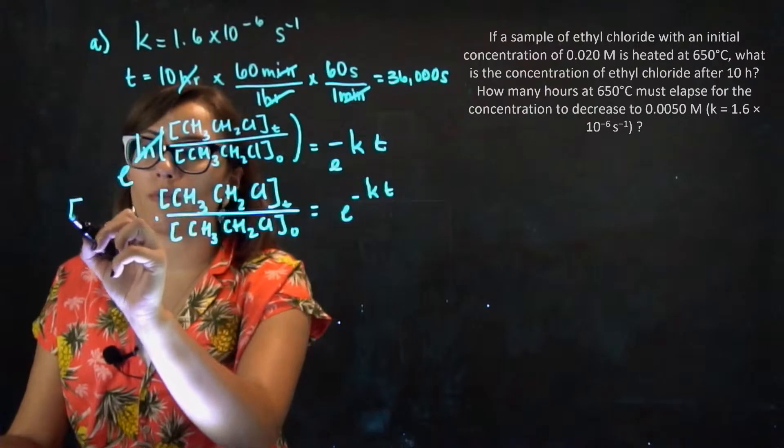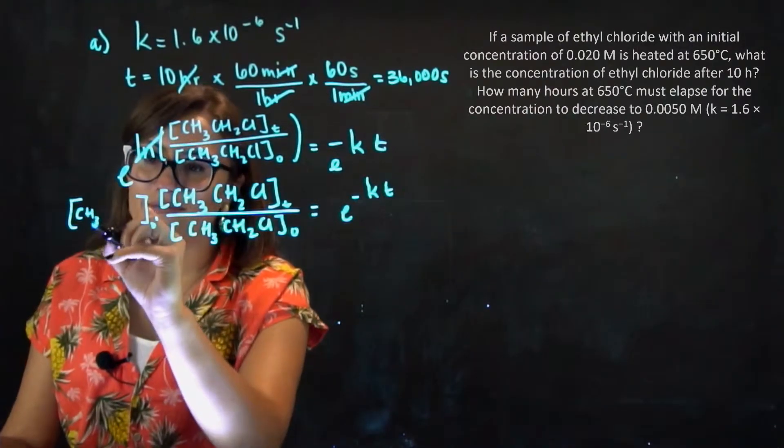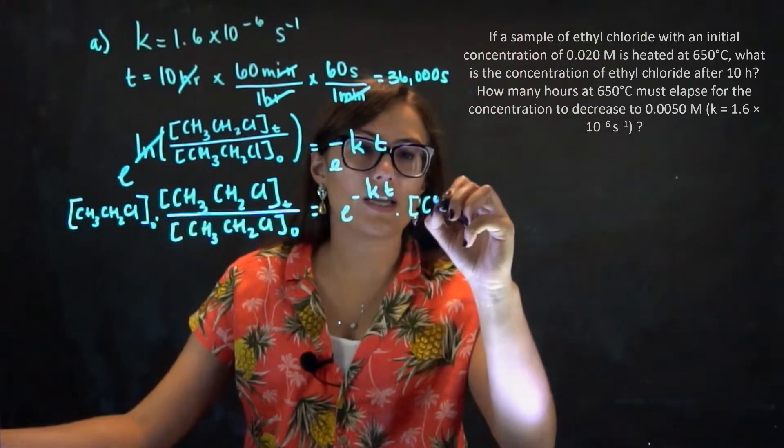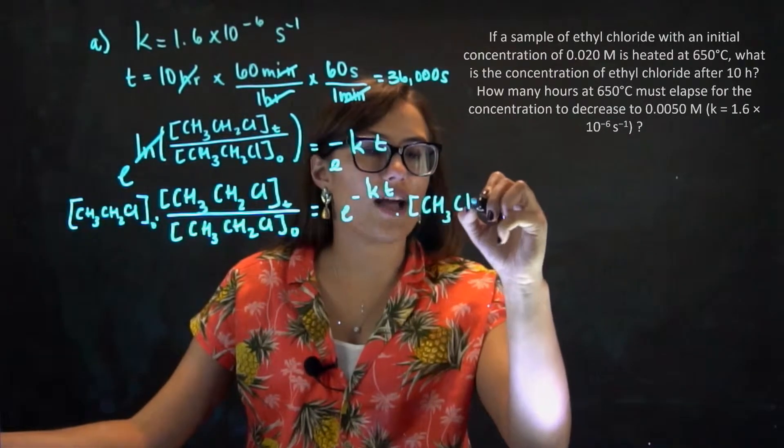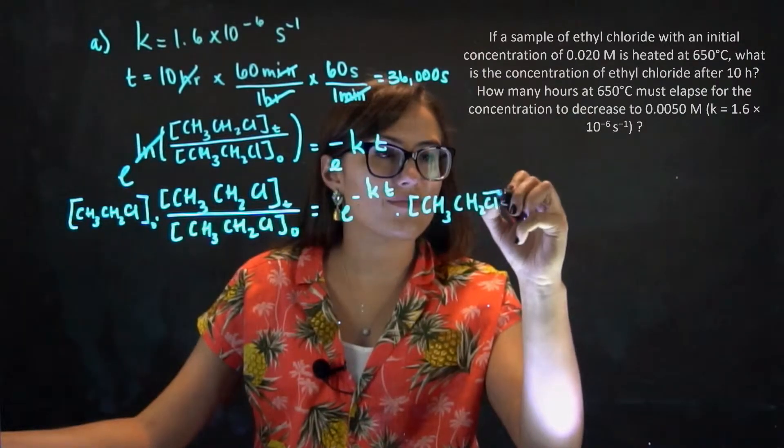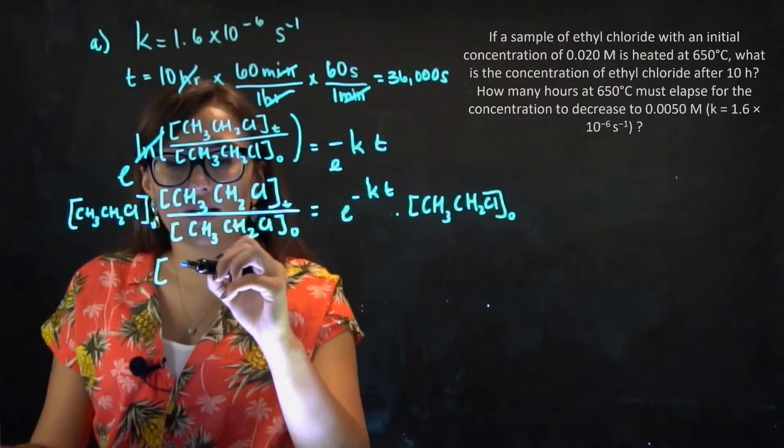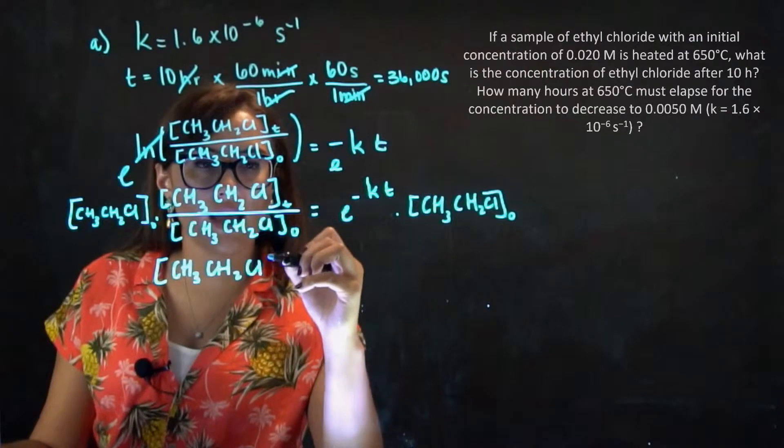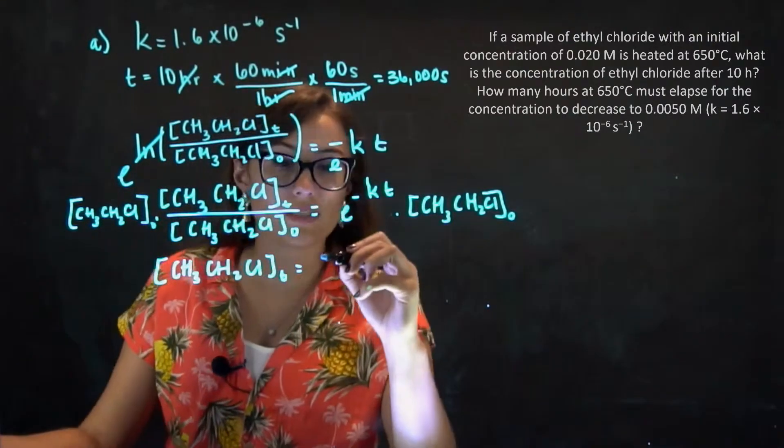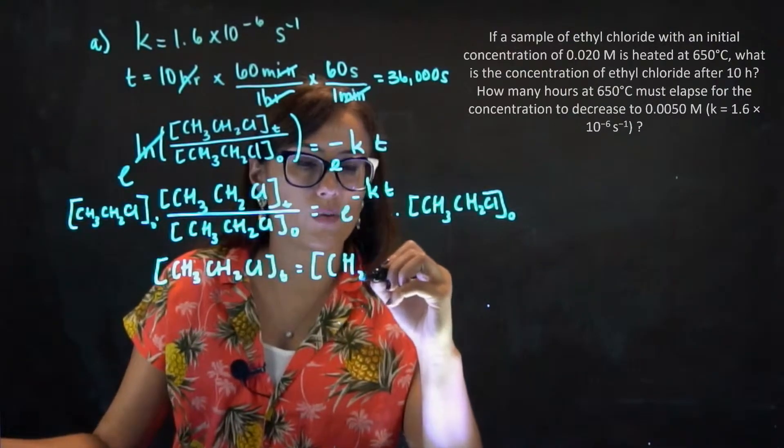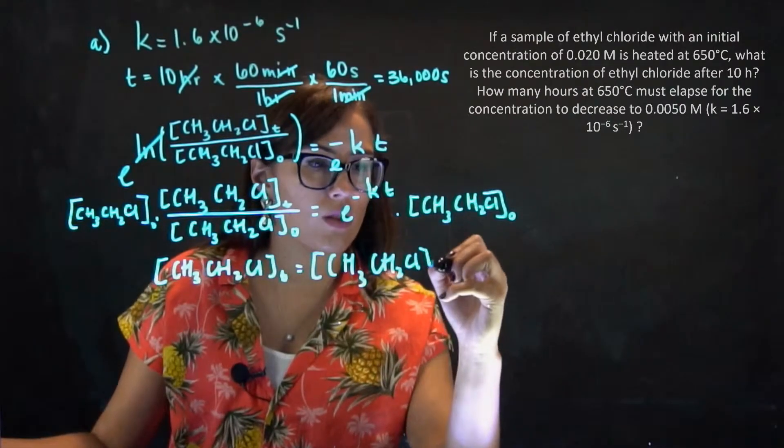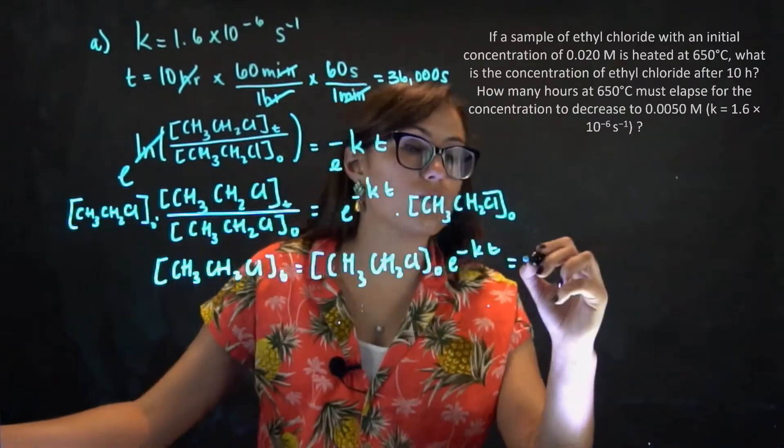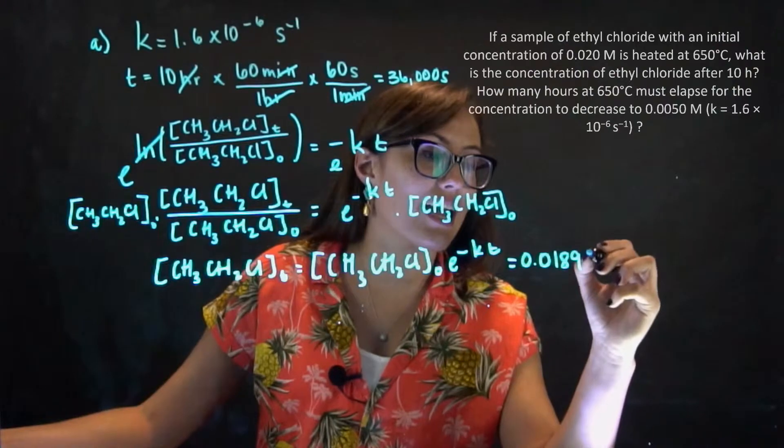We're going to multiply both sides by our initial concentration. And then we're going to plug in the appropriate values into this equation. And we get that the concentration of CH3, CH2, CL after a period of time has elapsed is going to be equal to 0.0189 molar.